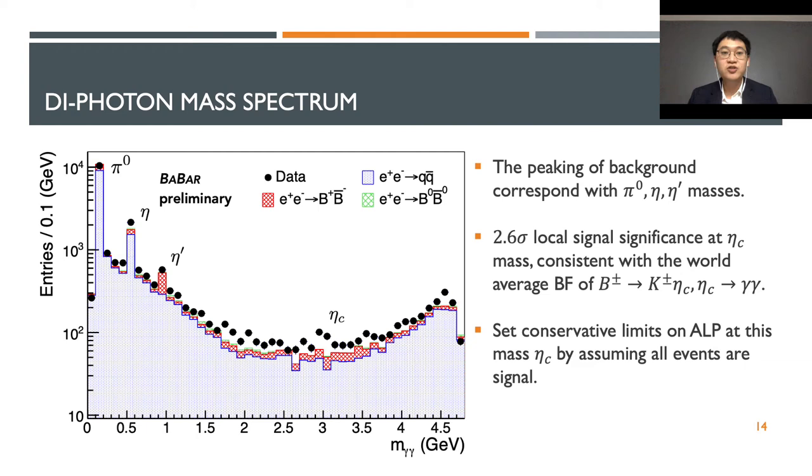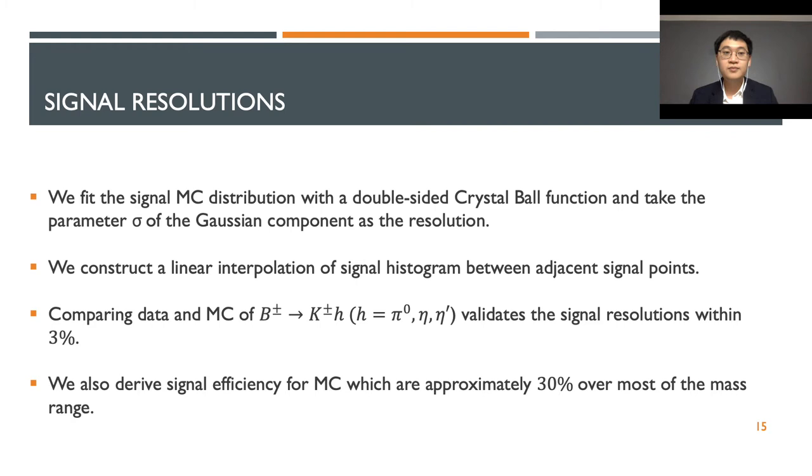The figure here shows the diphoton mass spectrum after the cut of BDTs. We can clearly see the meson resonance background peaking, which is why we exclude the interval for the hypothesis. We can also observe a small peak at the eta-c mass, where we then perform a signal extraction procedure to look for the B meson decay into K-on and eta-c decay into pair of photons. We see a local significance of 2.6 sigma, which is consistent with the world's average branching fraction. In fact, because there are so few events, the excess here is smaller than all the axion signal excesses everywhere, so we assume all the events here are signals and set a conservative limit for axion at this mass.